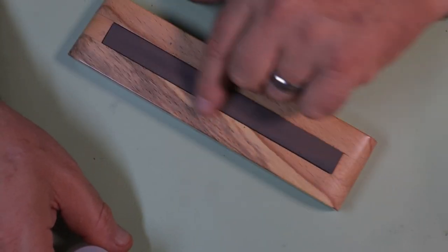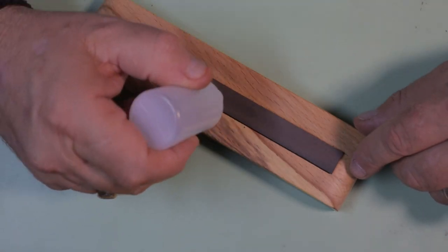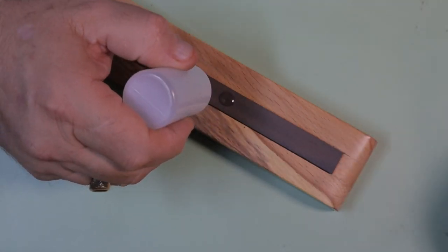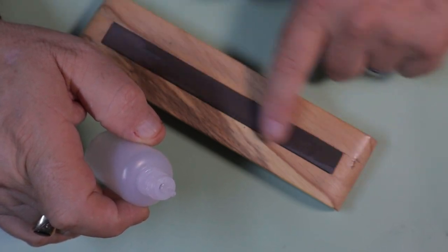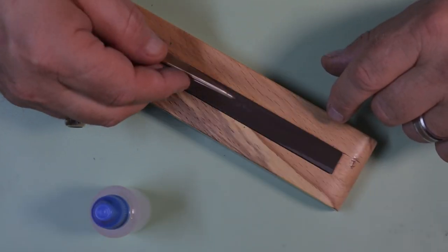As far as lubricating the sharpening stone, some people use spit, some people use water. I'm just putting a couple drops of clock oil on here wiping it across with my finger.